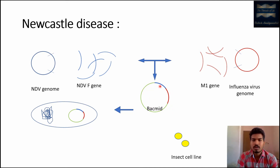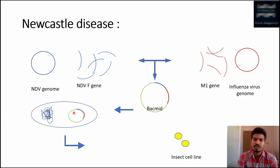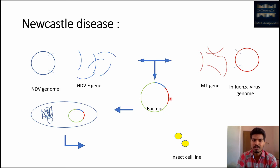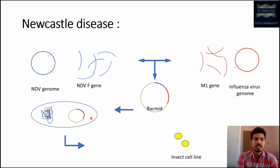The bacmid used here is a defective one. Once both genes are inserted into this bacmid and it is introduced into E. coli cells, those cells will multiply in culture. This bacmid is defective in the sense that when inserted into E. coli, it acts as a cloning vector only — not an expression vector. It is used to amplify the construct to sufficient quantities.